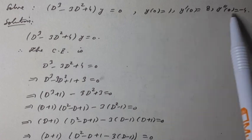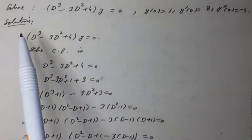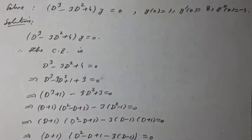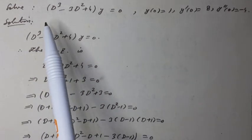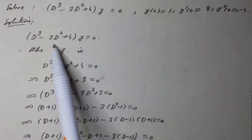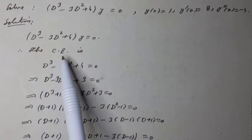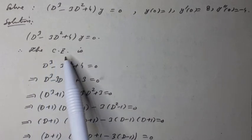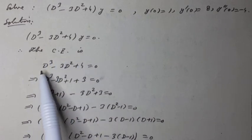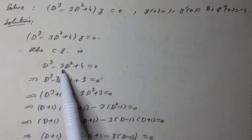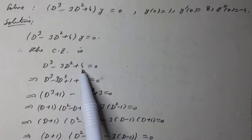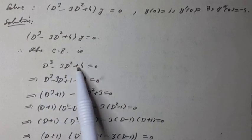This is an initial value problem. The given differential equation can be written in operator form, and therefore the characteristic equation or auxiliary equation is: D³ minus 3D² plus 4 = 0.